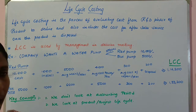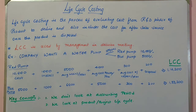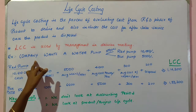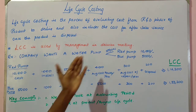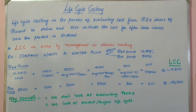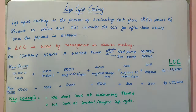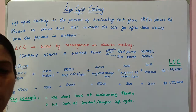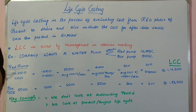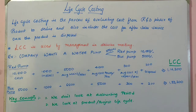Let me give an example of how life cycle costing is used in decision making. A company wants a water pump and has two options: a red pump costing 10,000 and a blue pump costing 5,000. As individuals, we generally prefer the cheaper pump. But a company applies the concept of life cycle costing to find out which pump to buy.